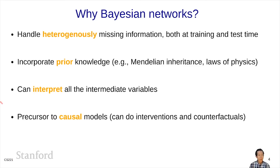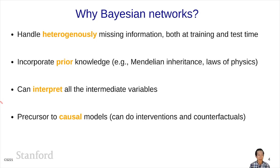Bayesian networks obviously aren't a panacea. In canonical AI applications such as vision, speech, and language, we have large data sets and mostly care about prediction. It's extremely hard to incorporate prior knowledge in these very complex domains. In these cases, Bayesian networks haven't been as successful and have largely been supplanted by deep learning approaches. Still, having Bayesian networks in your toolkit will allow you to use them effectively when you discover the right problem.